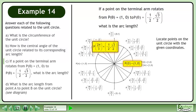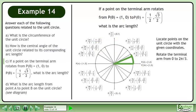Locate points on the unit circle with the given coordinates. Rotate the terminal arm from 0 to 2π over 3.